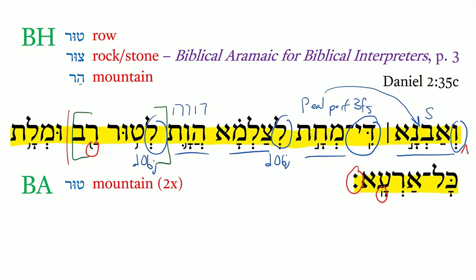So the stone became a mountain. And then we have a conjunction, and here we have the verb of filling — also Pa'al perfect, third feminine singular — filling all the earth. So going back to the beginning: 'And the stone that struck the image became a great mountain that filled all the earth.'